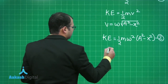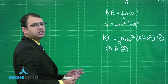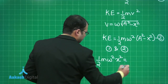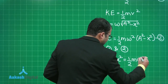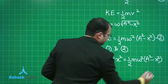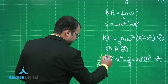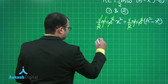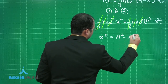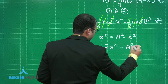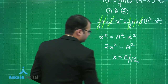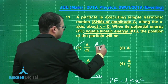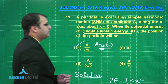Setting potential energy equal to kinetic energy: half m omega squared x squared equals half m omega squared (a squared minus x squared). The common factors cancel, leaving x squared equals a squared minus x squared, so 2x squared equals a squared, giving x equals a divided by root 2. Looking at the options, option number 1 is the answer to this question.